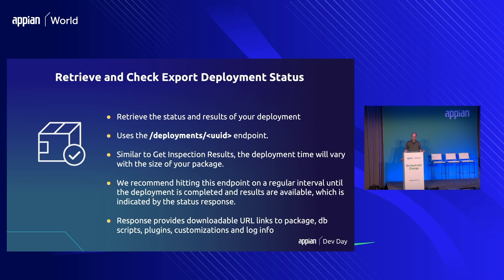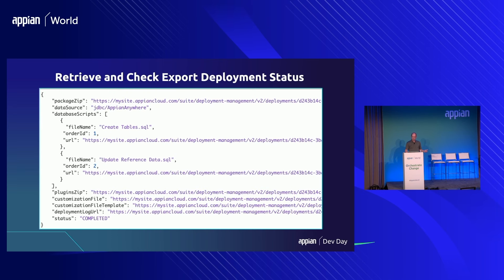This endpoint uses the unique ID of the deployment to retrieve information about it. Using that unique ID, you can poll every 10 to 20 seconds, and the JSON response brings back all the downloadable URL information — the package zip URL, the deployment, database scripts if any, plugins if any. So all the assets that you might want to deploy are returned; the only required one is the package itself, of course.